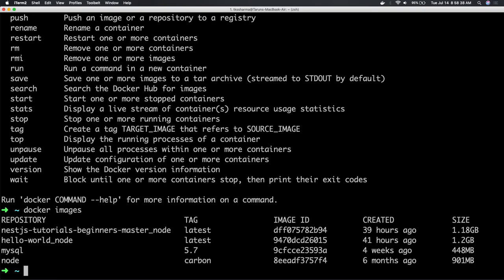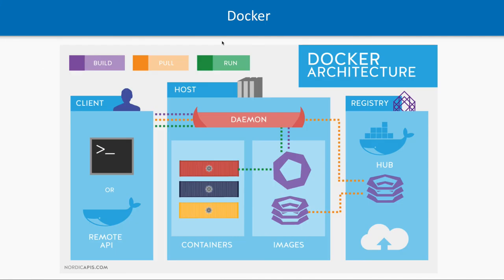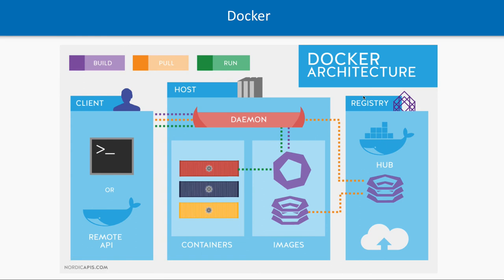I already have a few images available — these are Docker container images. Once you build these images they will become containers, which we will talk about in coming sessions. This is the main architecture you should understand clearly. We downloaded Docker, installed it, and Docker is running. There is the Docker daemon process, we have some images, and we will be building containers from the images.